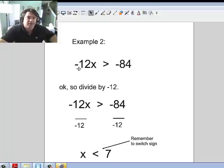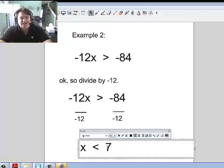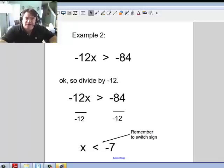Example number 2. We have -12x > -84. So, instead of times -12, we're going to divide by -12, divide -12 on this side, divide -12 on this side. And once again, for reasons I can't tell you why, I don't have a negative there, but I do now. So the answer should be x < -7, because I had to switch the sign.